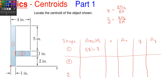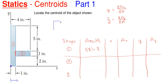Next is the individual X centroid, measured from the origin point. The centroid of a rectangle is at one half of the base and one half of the height. The overall width of shape one is one inch, so the individual X centroid is one divided by two, which gives me one half of an inch. Then A times X is eight times one half, which gives me four.